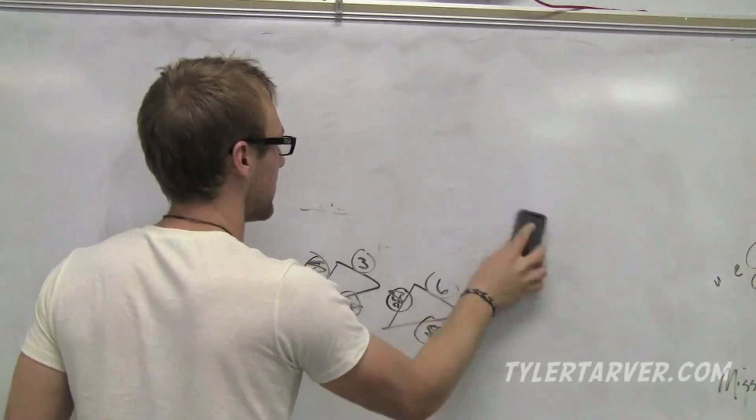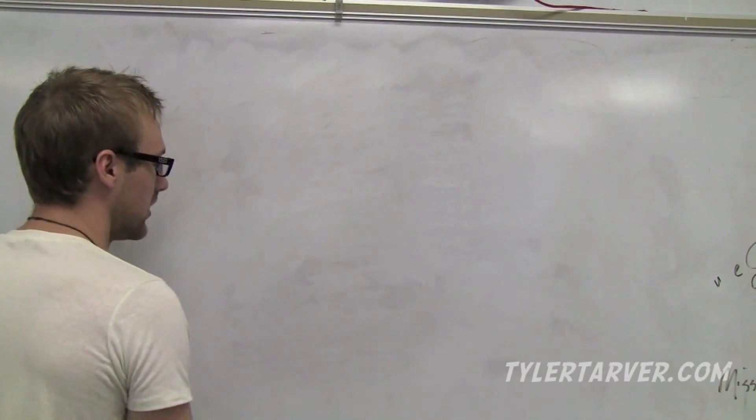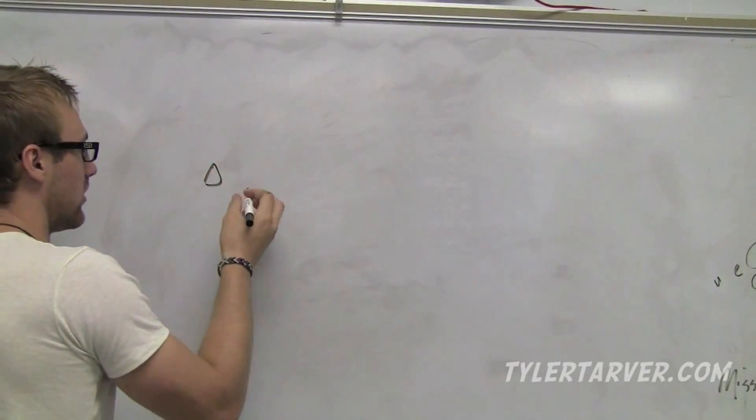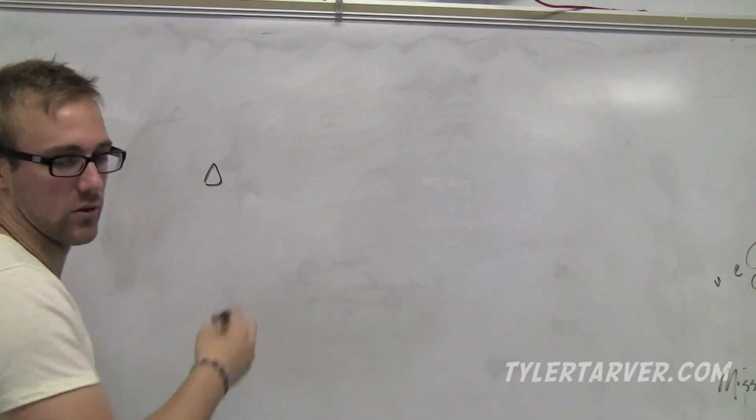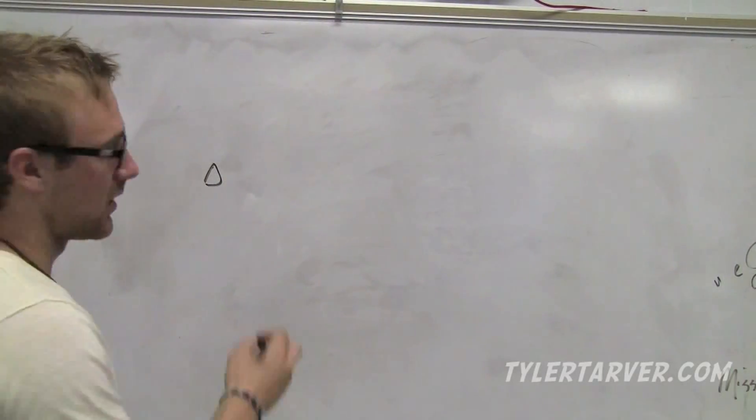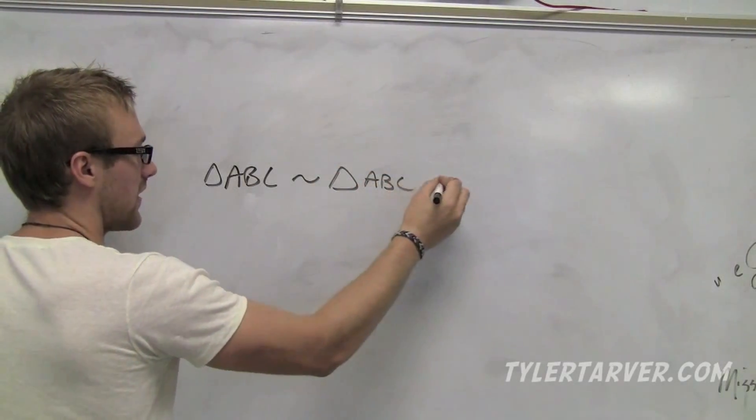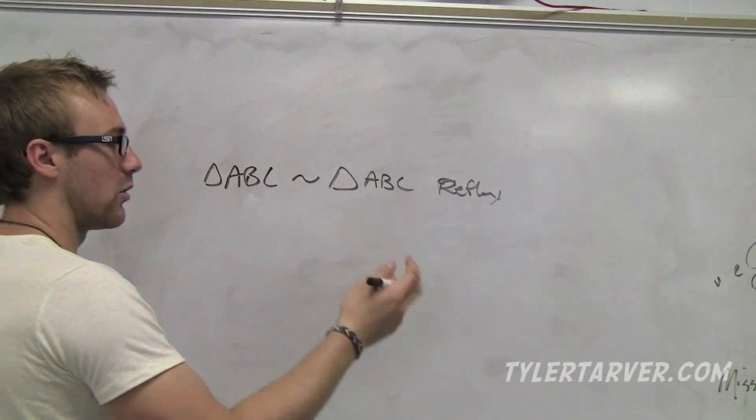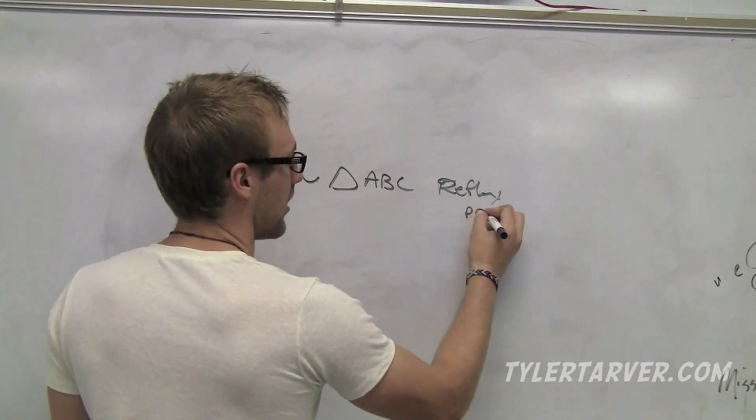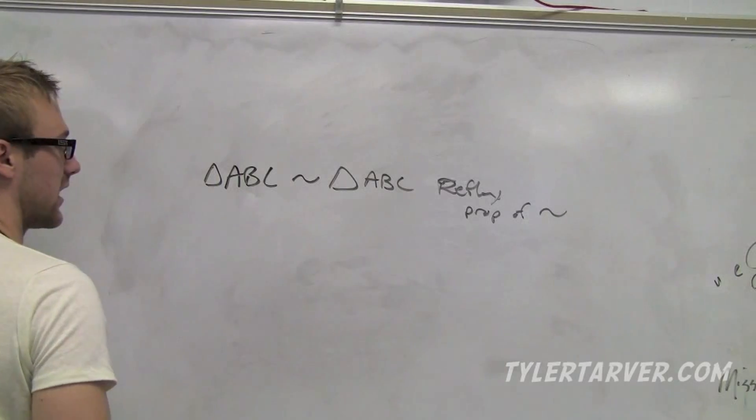There's the reflexive property, which means something is congruent to itself. Like triangle - and we're working this with similarity. If triangle ABC is similar to triangle ABC, that's the reflexive property, because you look in the mirror, you see yourself. So it's the exact same. Reflexive property of symmetry. That's the symmetry sign. Don't forget that.